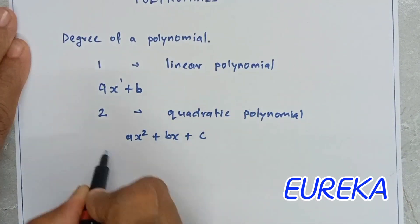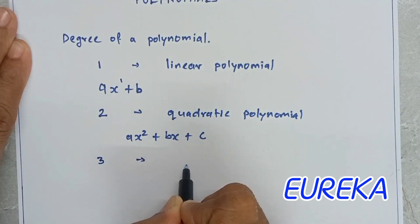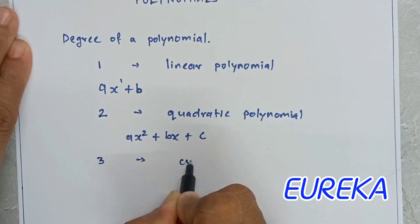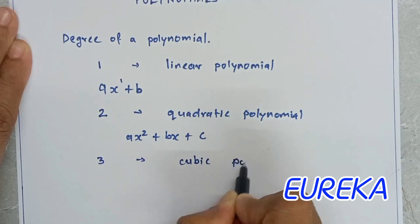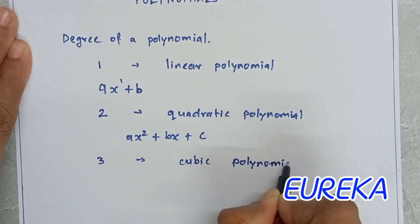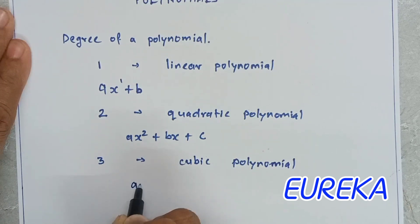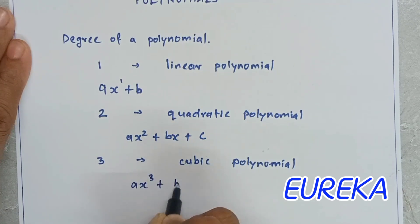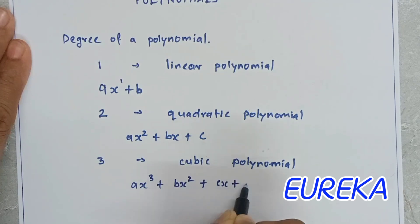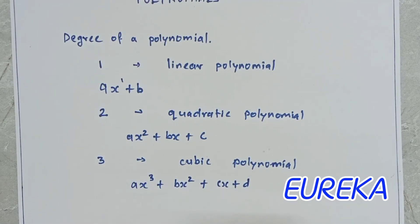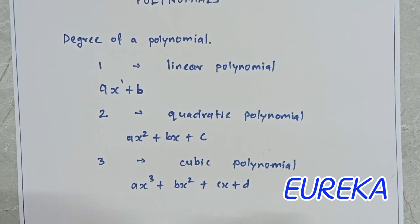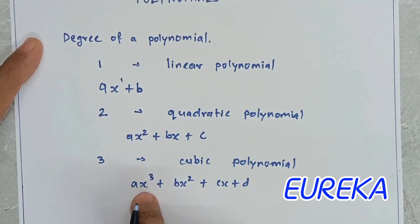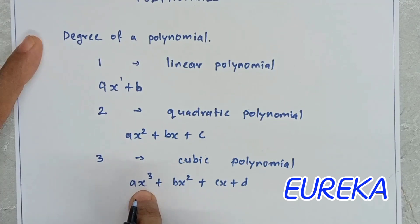Can you guess about degree 3 — what we call it and how we represent it? It is called a cubic polynomial. When we write a cubic polynomial, the general representation is ax cubed plus bx squared plus cx plus d, where the highest power is 3. This is just a general representation — it does not mean all these terms must be present. What is necessary is that the highest power should be 3 for cubic, 2 for quadratic, and 1 for linear.